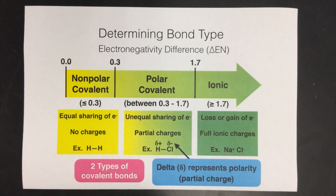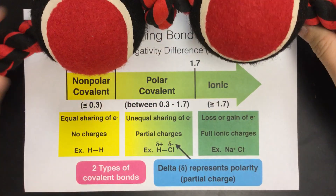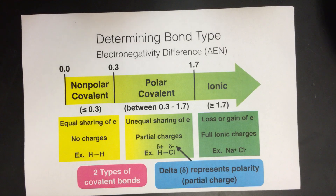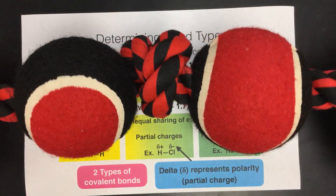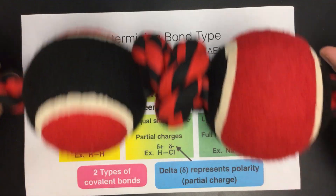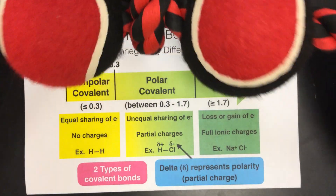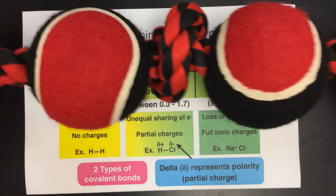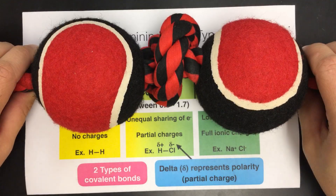This is a slide from your notes that shows the three types of bonds that could occur. This is all based on electronegativity, which we learned in a previous unit is this tug-of-war — a measure of how badly you want the electrons in a bond. We can have three results in a tug-of-war match. If we're both pulling on these electrons equally, it's going to be equal sharing of the electrons between the two atoms.